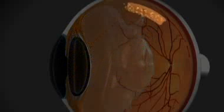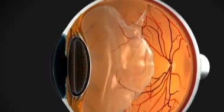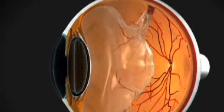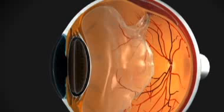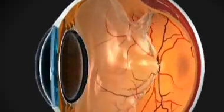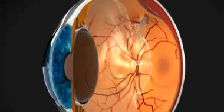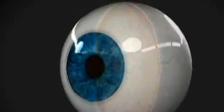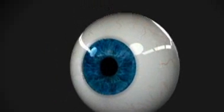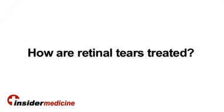In some instances, that retinal tear itself might progress to become something known as a retinal detachment, at which time not only do you have an opening in the retina that allows fluid under the retina, but fluid itself begins to accumulate. This is the most serious outcome and represents a real potential for blindness.